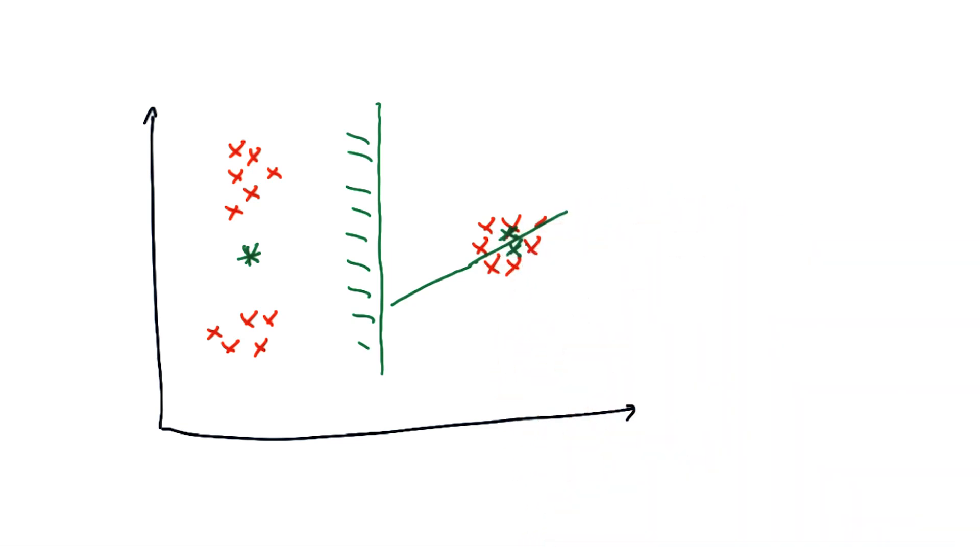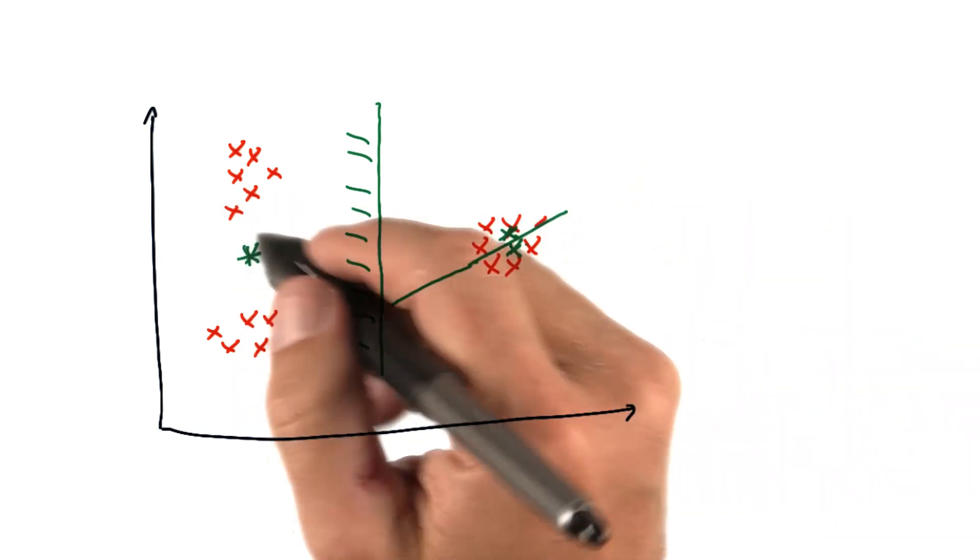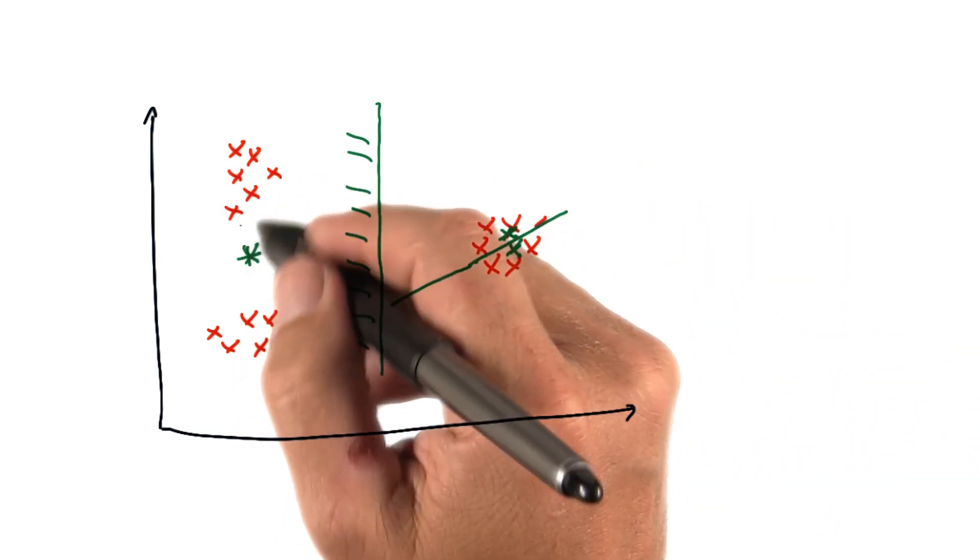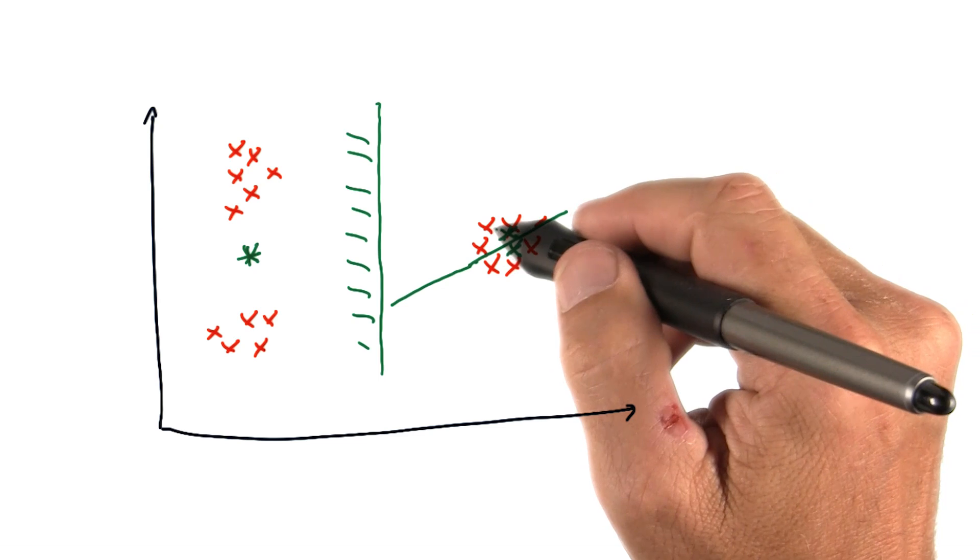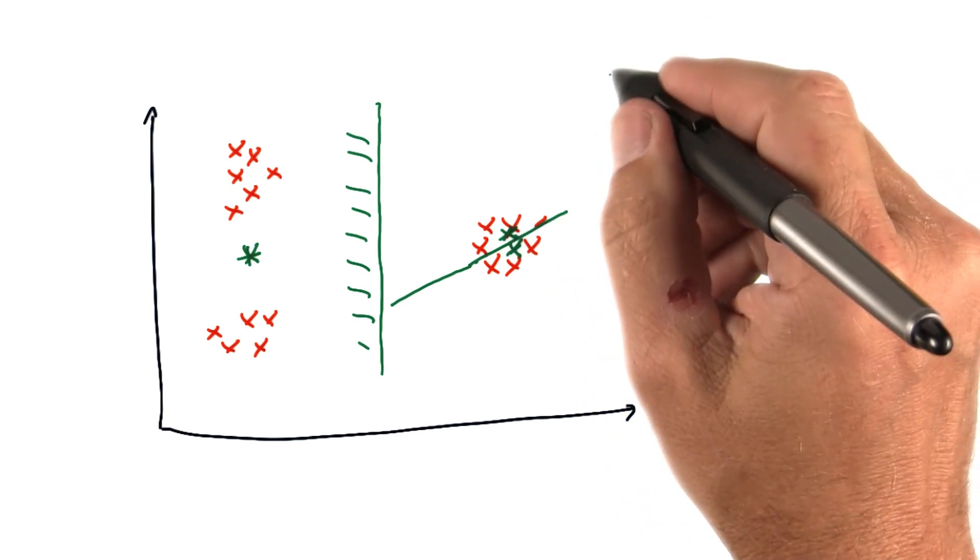And that is a stable solution, because in the assignment step, nothing changes. This guy will still correspond to all the guys over here, and these guys will correspond to the guys over here. That's called a local minimum.